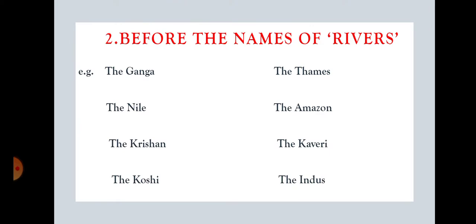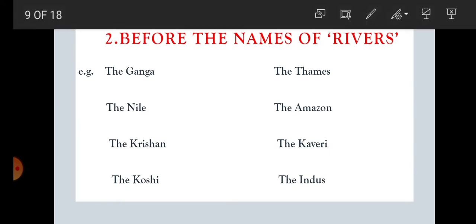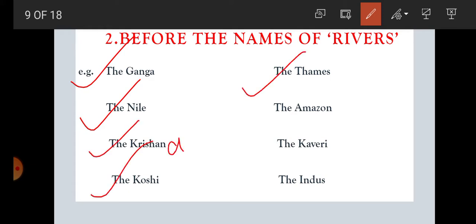Rule number two: before the names of rivers, we are using 'the.' For example: the Ganga, the Nile, the Krishna, the Koshi, the Thames, the Amazon, the Kaveri, the Indus. They are all names of rivers and that is why we have put 'the' before them.